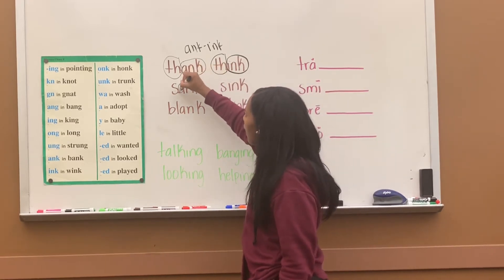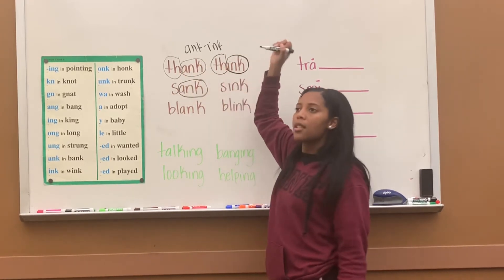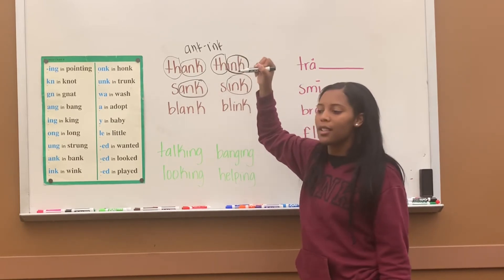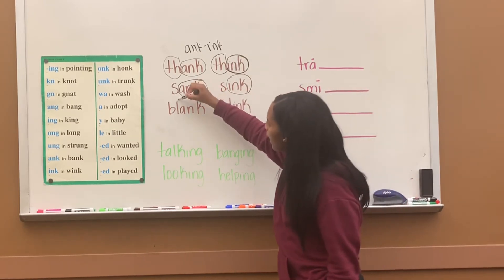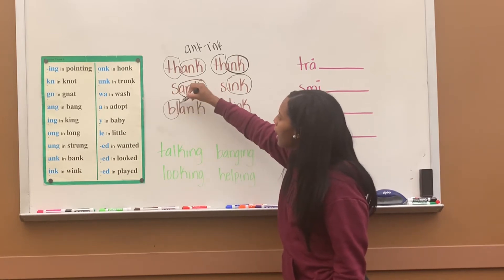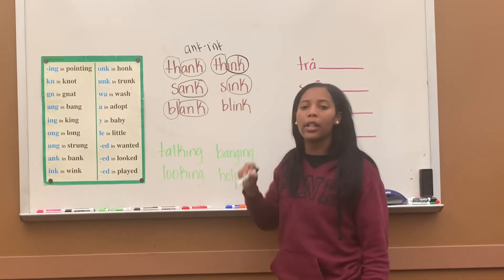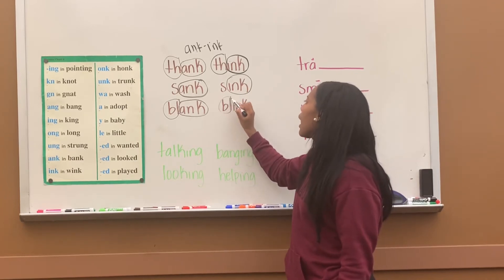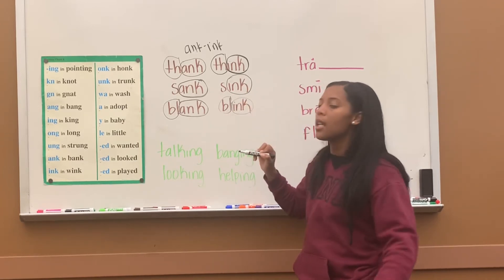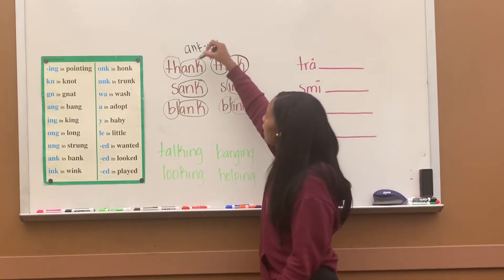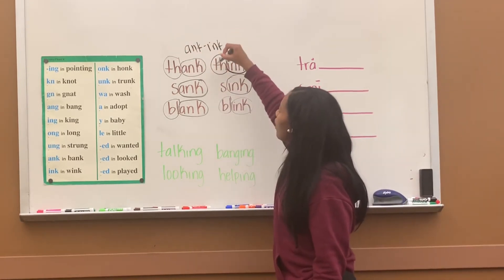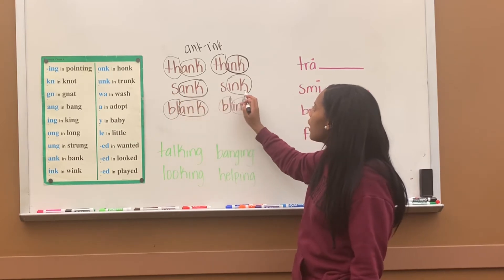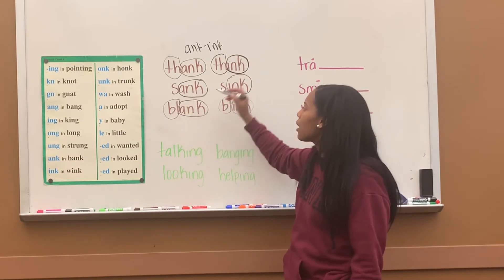Next, A-N-K, 'ank' — sank. I-N-K, 'ink' — sink. B-L, 'bl,' and A-N-K, 'ank' — the word is blank. B-L, 'bl,' and I-N-K, 'ink' — the word is blink. Let's read them: thank, think, sank, sink, blank, blink.